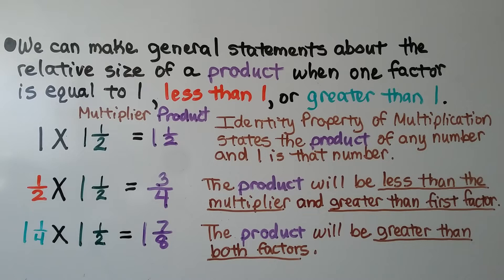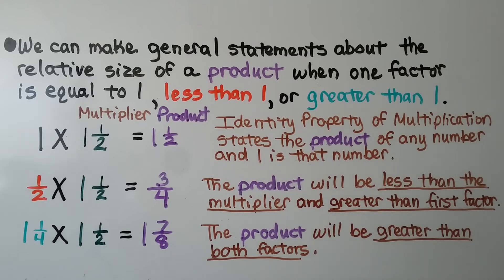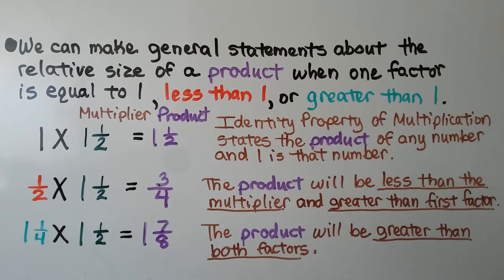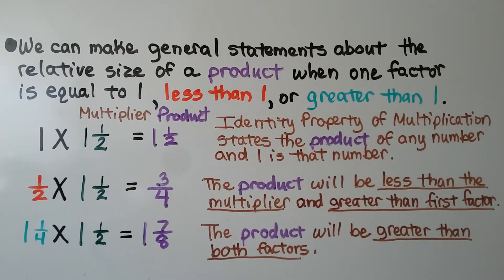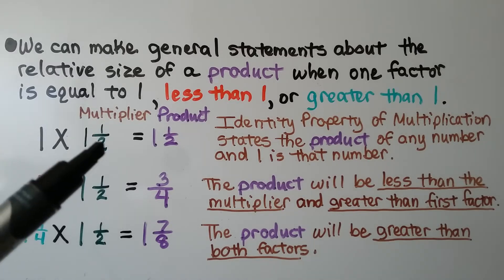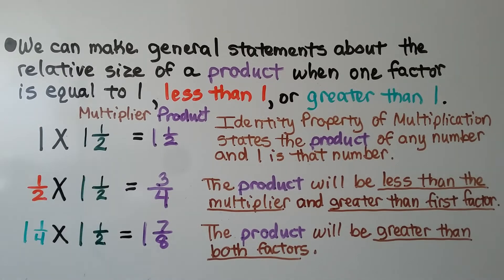We can make general statements about the relative size of a product when one factor is equal to 1, less than 1, or greater than 1. Our multiplier is 1 and 1 half — a fraction greater than 1. For 1 times 1 and 1 half, the product equals 1 and 1 half, by the identity property of multiplication: the product of any number and 1 is that number.